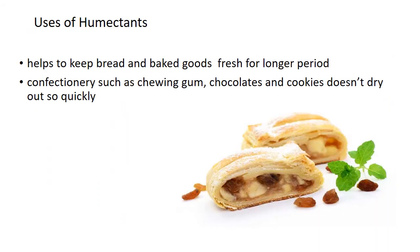Now let us see the uses of humectants. Humectants help to keep bread and baked goods fresh for a longer period. In chocolate-centered cakes and biscuits, for example, the chocolate in the center remains in a moist state right from the time of manufacture till it reaches the consumer, and that is because of the addition of humectants.